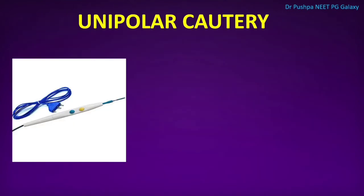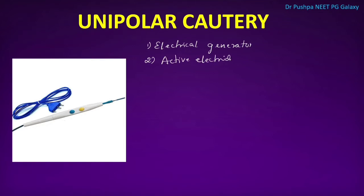In monopolar or unipolar cautery, the electrosurgical unit consists of an electrical generator, an active electrode where current enters the patient, and a return electrode where current exits. The handle tip is the active electrode, whereas the grounding pad is the return electrode.